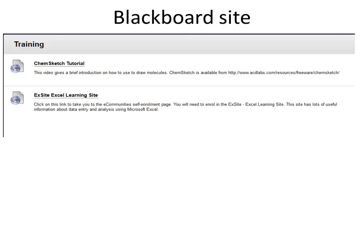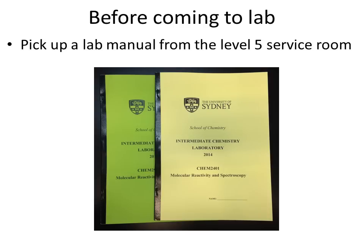Within the training folder you will find a tutorial on how to use ChemSketch and the enrolment page for the Excel learning site. Make sure you do this training as soon as possible so you're ready when you come into the lab. The first thing to do is to pick up a lab manual from the level five service room. This lab manual contains all the important information you need to know about labs so make sure you read through it thoroughly.